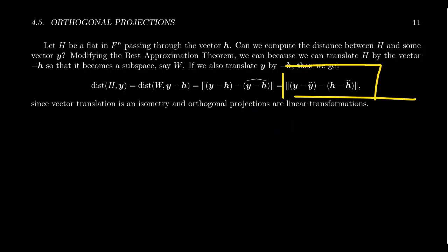We compute the distance between an affine set and any point. So you have to take y minus its orthogonal projection and then subtract from that h minus its orthogonal projection, where h is any vector in the flat. And y-hat and h-hat are the orthogonal projections of these vectors into the subspace W.